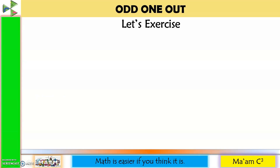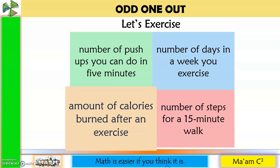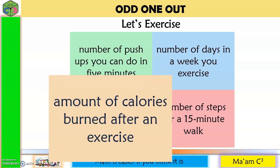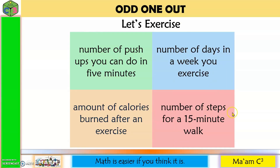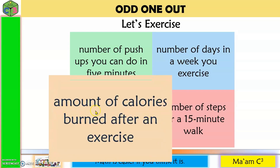Let's have another activity: Odd One Out. Choose which one does not belong to the group. Number of push-ups you can do in 5 minutes, number of days in a week you exercise, amount of calories burned after an exercise, number of footsteps for a 15-minute walk. The odd one out is the amount of calories burned after an exercise, because push-ups, days, and footsteps are all countable data, while calories burned is measurable data.